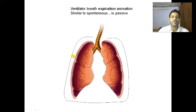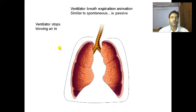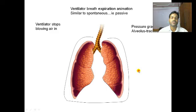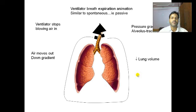Ventilator breath expiration is similar to spontaneous breathing — it is passive. The ventilator stops blowing air, the pressure gradient from alveolus to trachea causes air to move out of the lungs, the lung collapses, and lung volume decreases. Expiration is passive and similar in both positive pressure ventilation and spontaneous breathing.